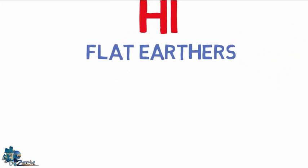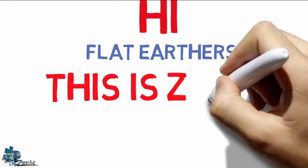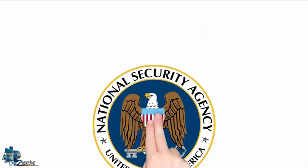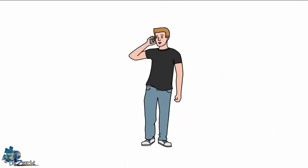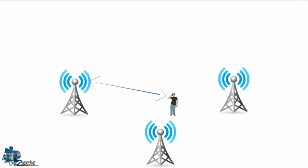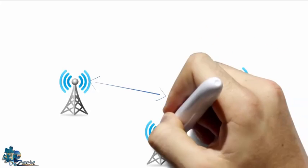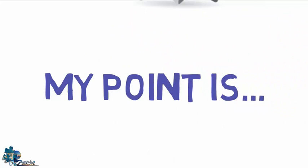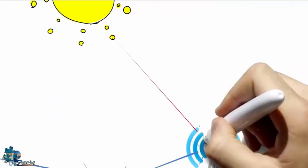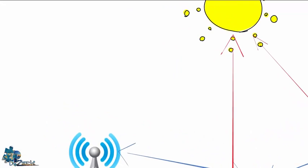Hi Flat Earthers, this is Zach. The NSA can track you by using three cell towers — your location can be tracked fairly accurately by triangulating among three cell towers. My point is: why don't we use the same techniques to locate and track the sun?